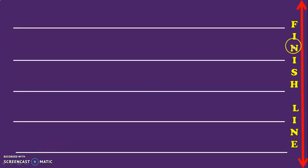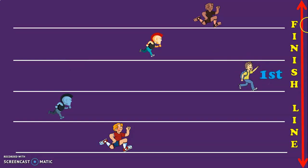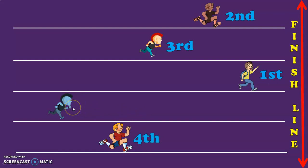Let us do another interesting activity — these are the race tracks, and this is the finishing line. Here we have five children running towards the finishing line. Now you will have to mark the position of each child. We know that ordinal numbers help you give the position of objects. So, using ordinal numbers, write the position of the children in the running race. The first position goes to this child, second position to this boy, third position to this child, fourth position to this child, and the fifth position to this child.